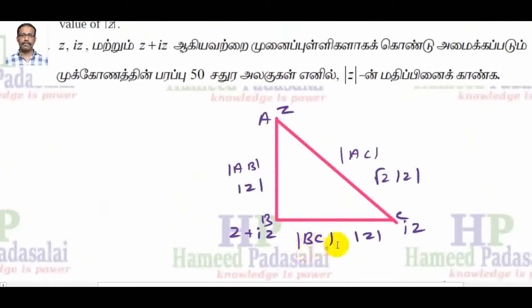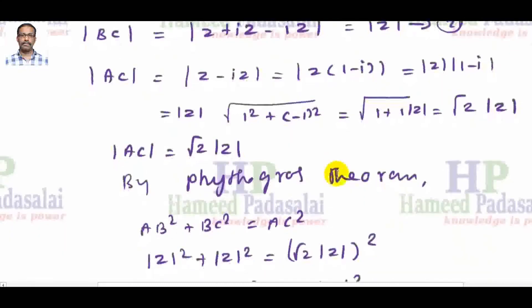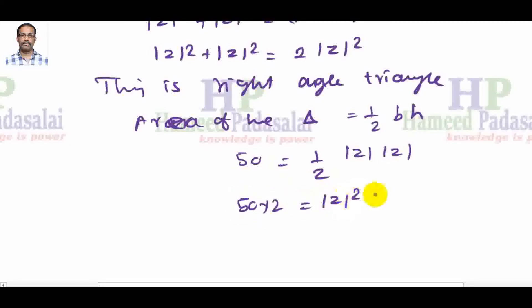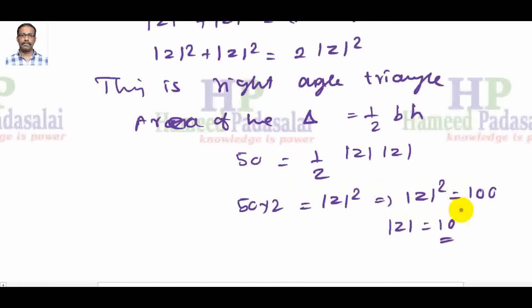Area of the triangle equals 50, so 50 = ½ × |z| × |z|. That gives us 50 × 2 = |z|², so |z|² = 100. Therefore |z| = 10. This is the answer to sum number 8. Thank you.